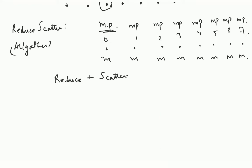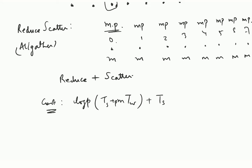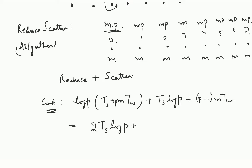What is going to be the cost of this? The cost of reduce had log p stages. The cost is log p times Ts plus m·Tw, but careful here — the message size is pm, since we are doing a reduce of a pm-sized array. And for the second phase, the scatter costs Ts·log p plus (p−1)·m·Tw. So the total cost is about 2·Ts·log p plus (2p−1)·m·Tw.